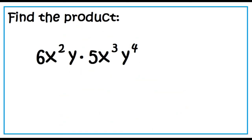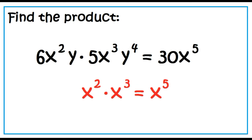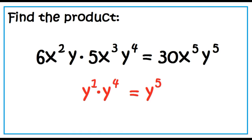Find the product: 6x squared y times 5x cubed y to the power of 4. 6 times 5 equals 30. x squared times x cubed is x to the power of 5. y times y to the power of 4 is y to the power of 5. The answer is 30x to the power of 5 y to the power of 5.